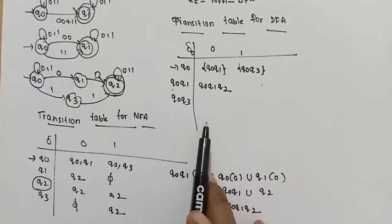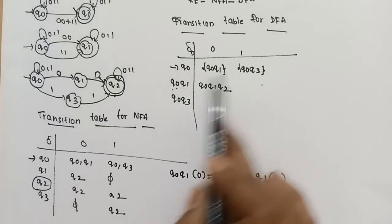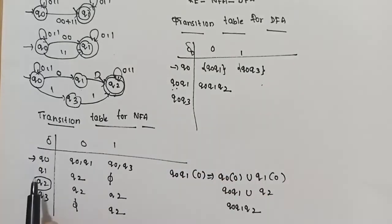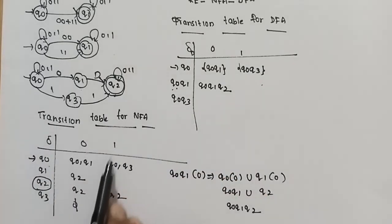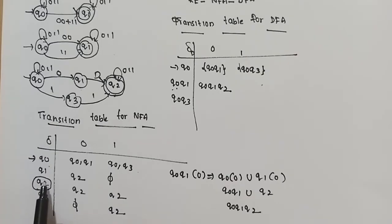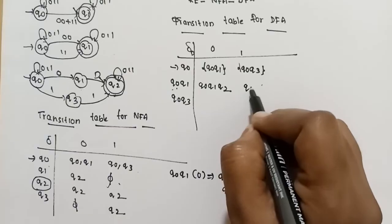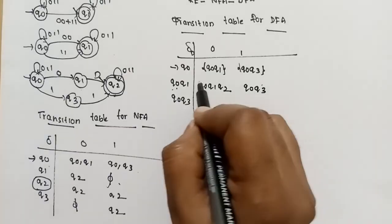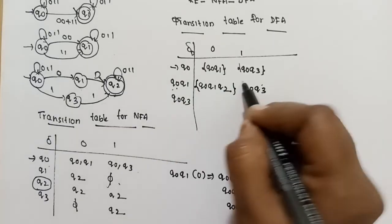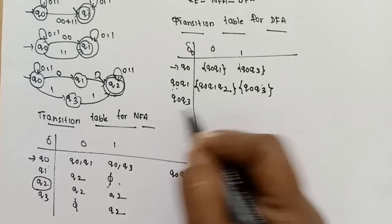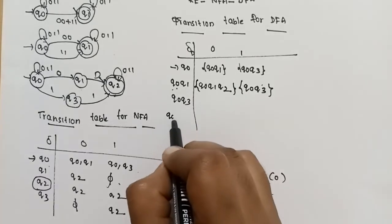{Q0, Q1} on 1: Q0 on 1 goes to {Q0, Q3}, Q1 on 1 goes to empty (Q0, Q3 union empty = {Q0, Q3}). So {Q0, Q1} on 1 goes to {Q0, Q3}. This is the same existing state. {Q0, Q1, Q2} can be expanded further.